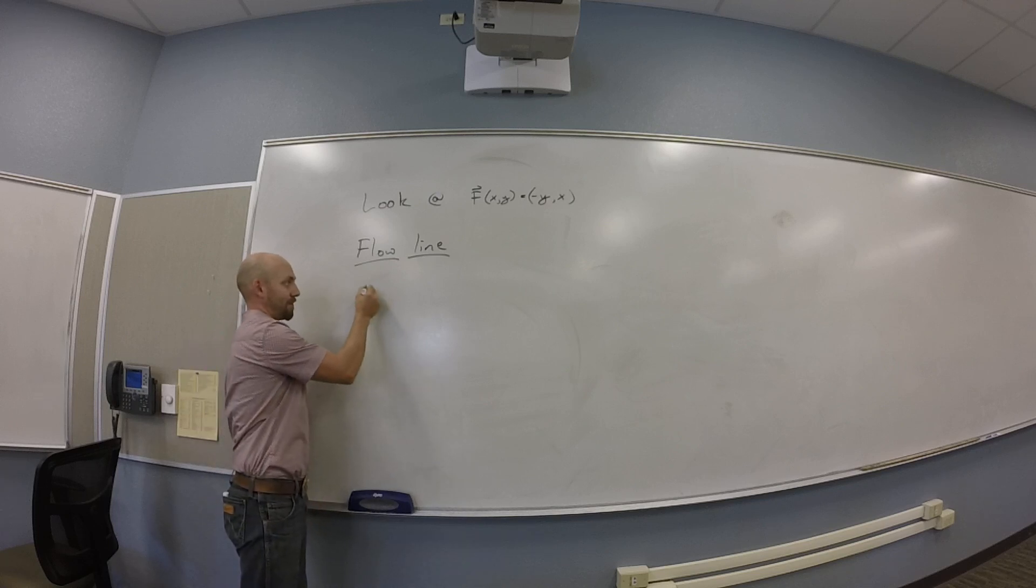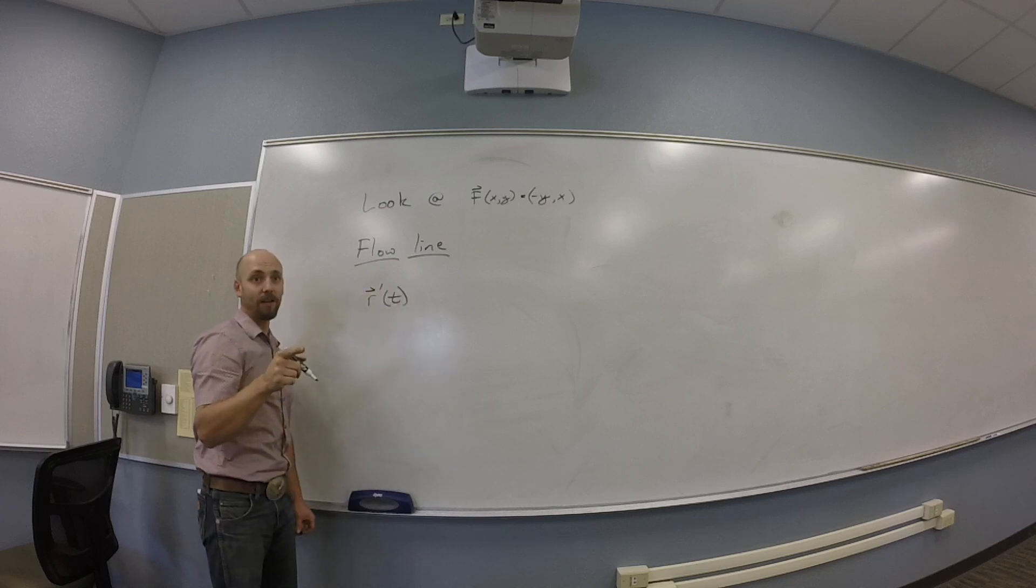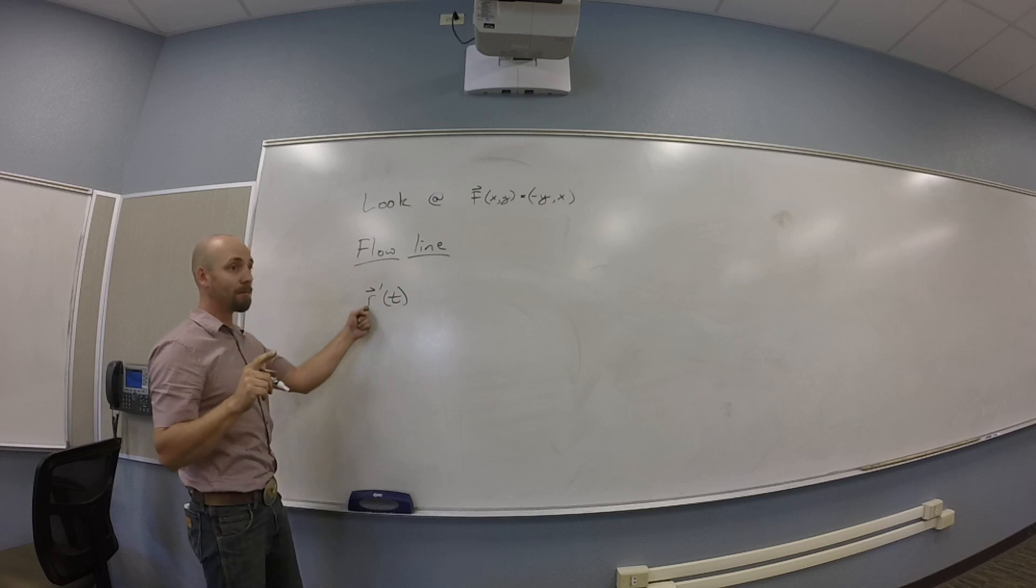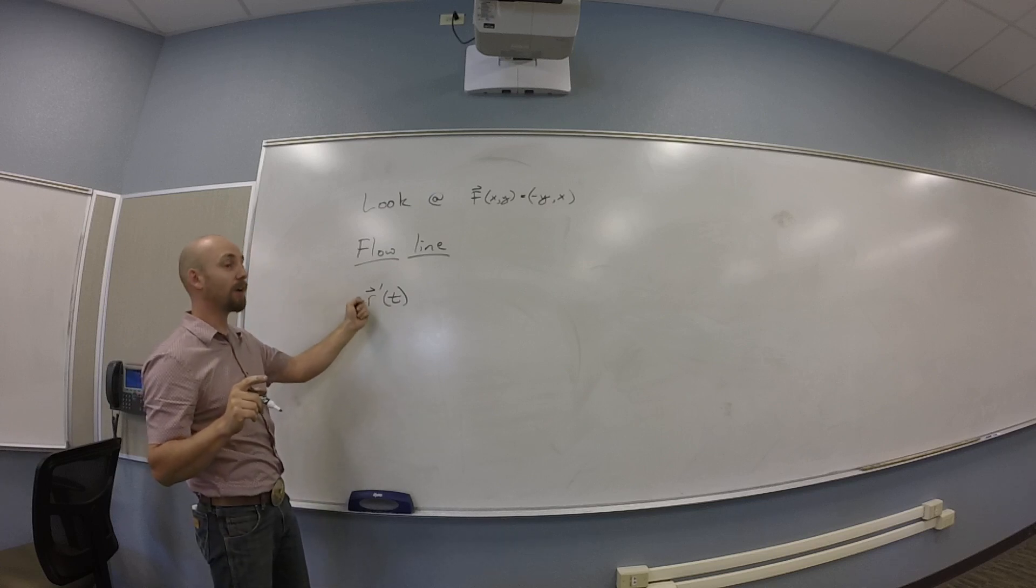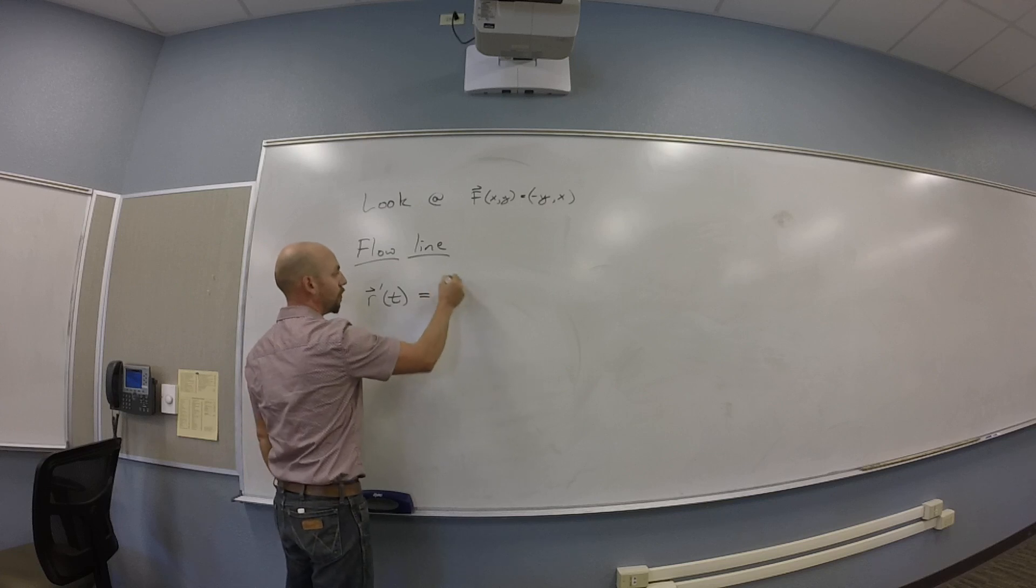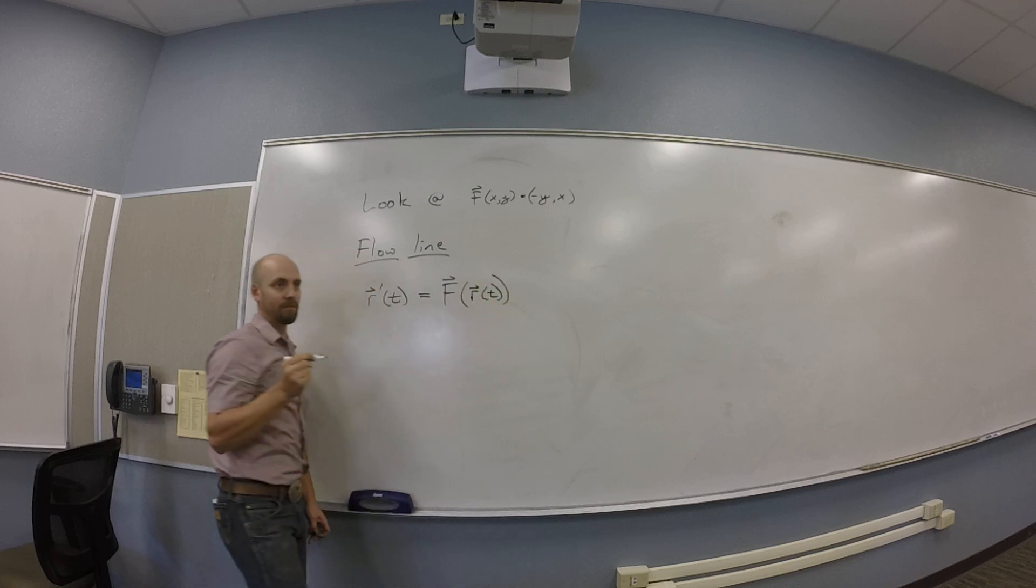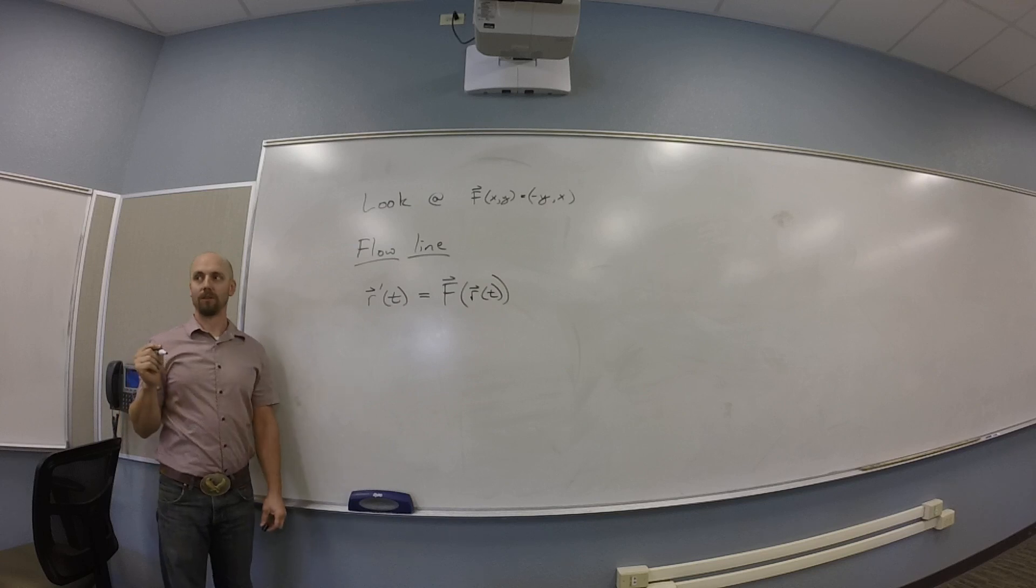So a flow line is a parametrized curve where the derivative of that curve is what you get when you take the vector field and evaluate at the point you're at. You guys with me on that?